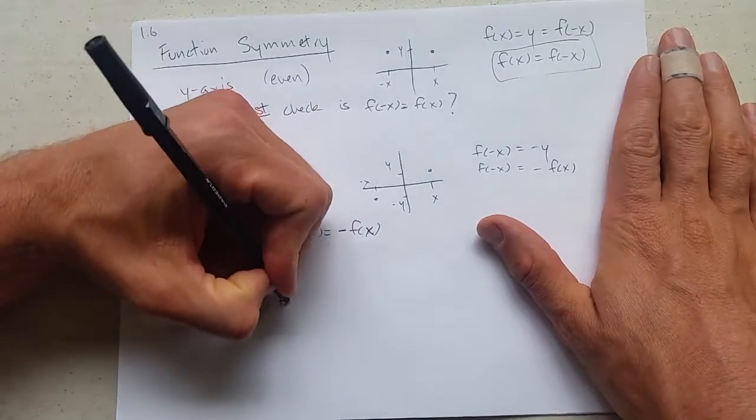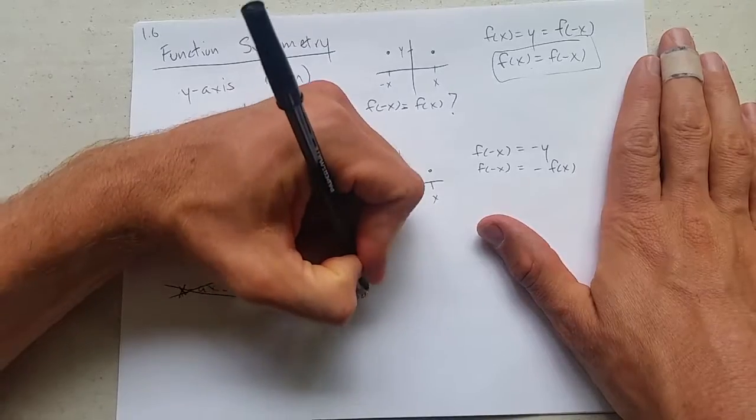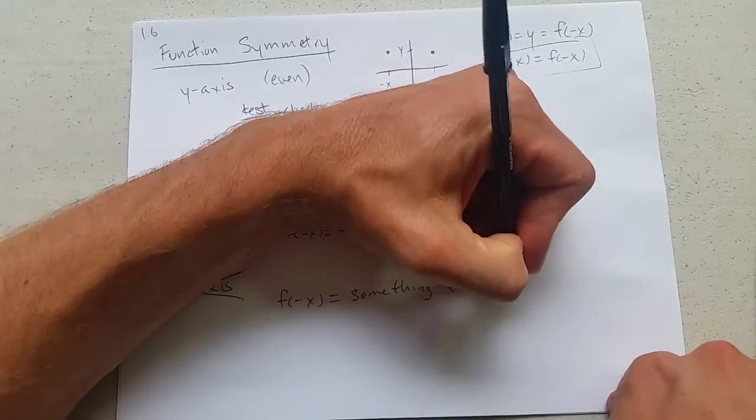So, f of negative x is equal to something else, you get no symmetry.